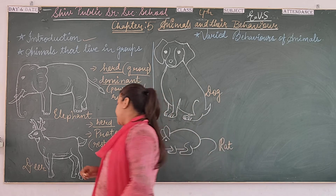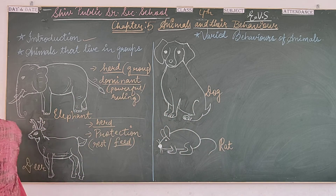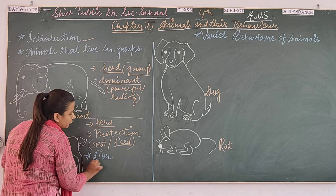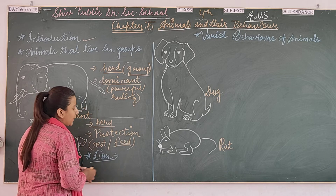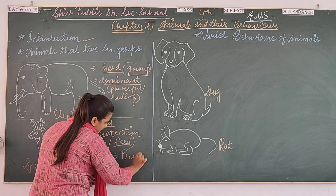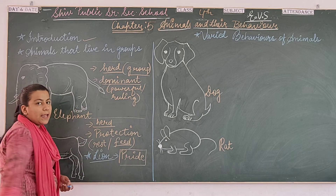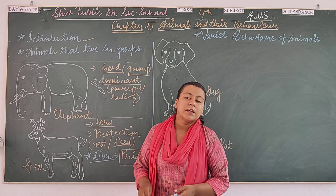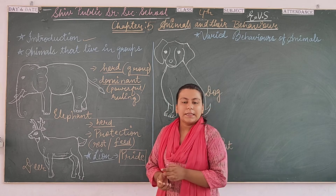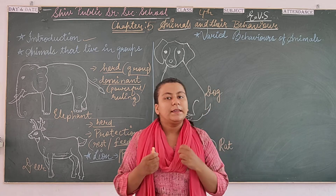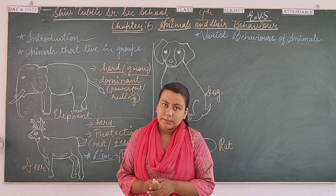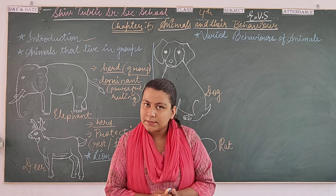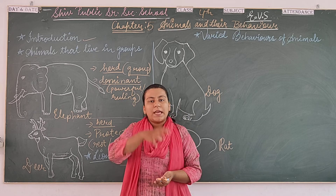Next comes the lion. The term used for a lion's group is called a pride. The word pride is used for lions because the lion is the king of the jungle. The main leader is the male lion, and the female lioness is always going to hunt for the male lion. They have some territories and boundaries set for their particular group.